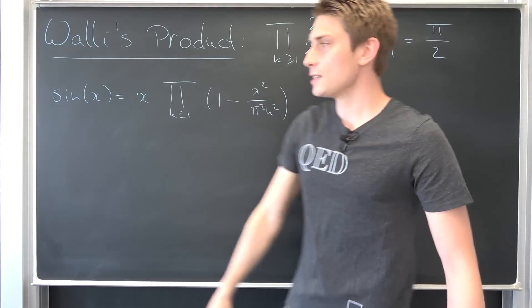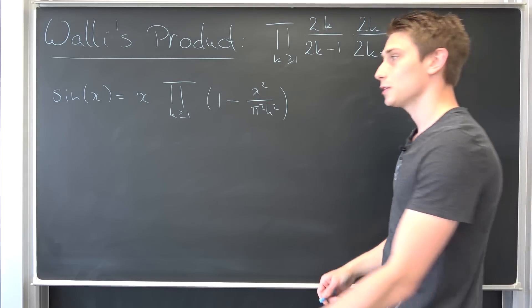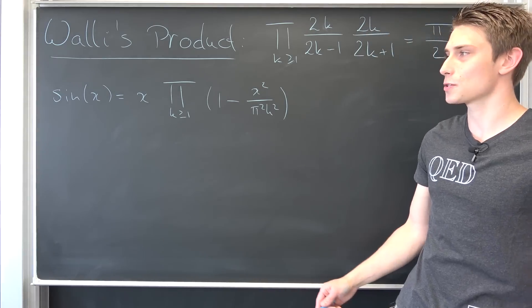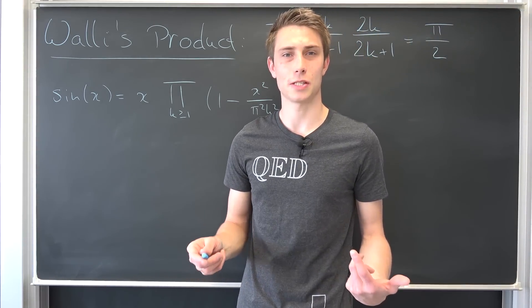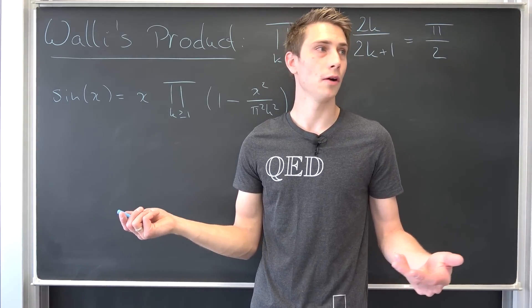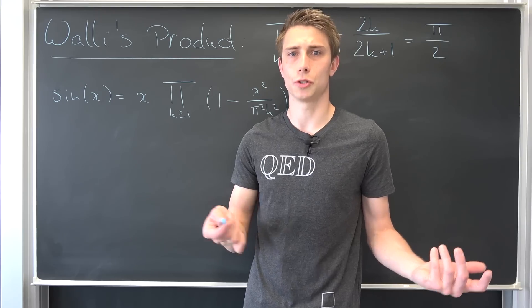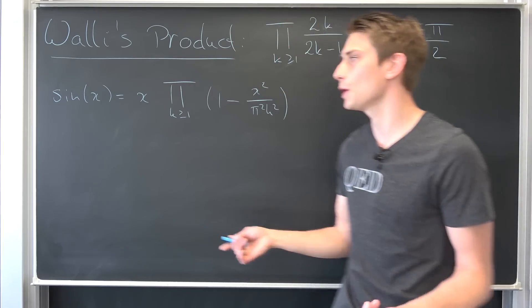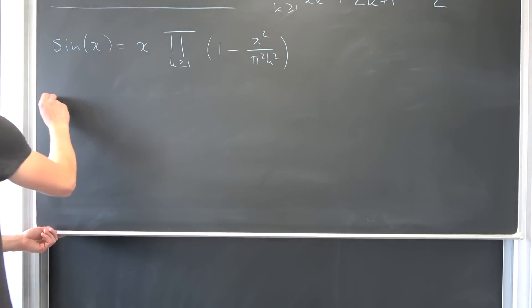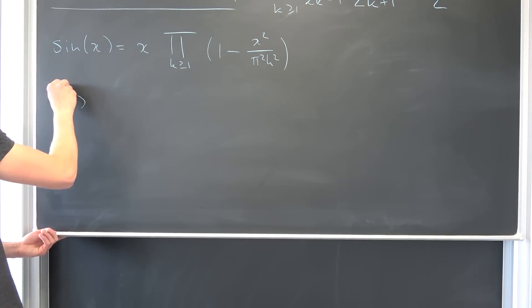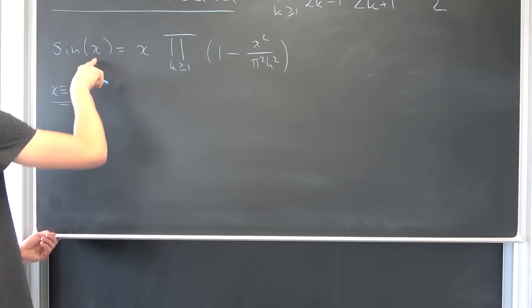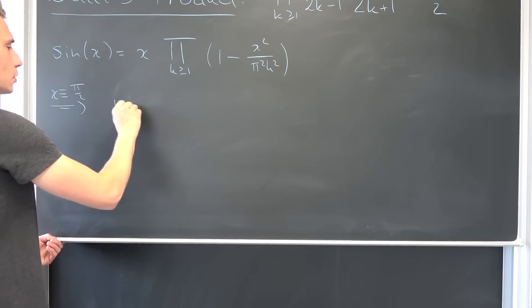What we basically want to do is plug in pi over 2 as our x value, because the sine of pi over 2 is nothing but 1. You can see this from the graph, or show it using Euler's formula. So we are going to plug in x equal to pi over 2, and sine of pi over 2 is nothing but 1.